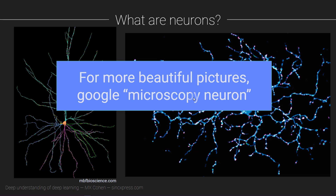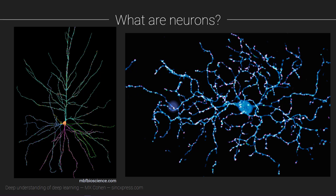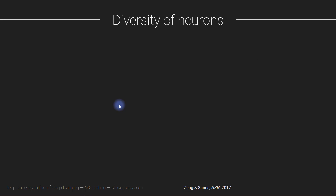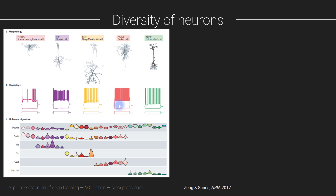We talk about neurons as if they were one thing — one canonical neuron — but you can already see that these two neurons are quite different. In fact, no two neurons are the same. There is an incredible diversity of neurons; there are probably hundreds or even thousands of different kinds — like different species of neurons. I say 'probably' because we don't even have an established taxonomy of neurons. We don't fully understand the rich complexity of neuron categories, let alone all the details of how neurons actually compute information.